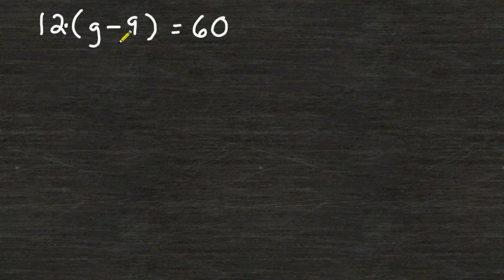So, whatever g is, when we subtract 9 from that value it has to equal 5. And the only thing that g can be is 14.